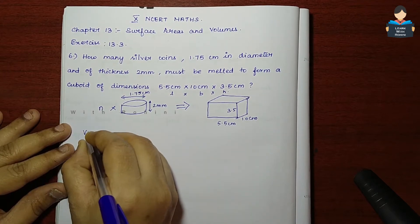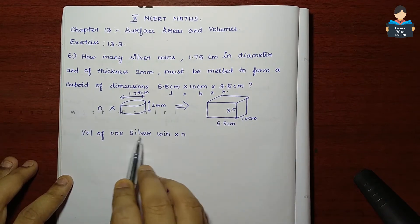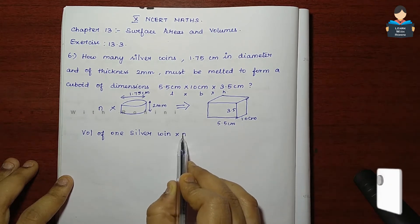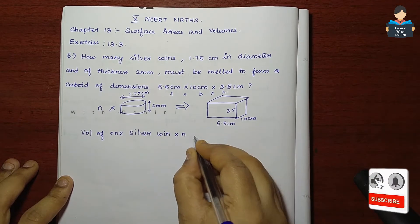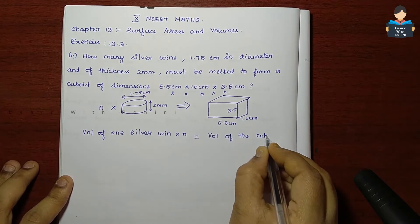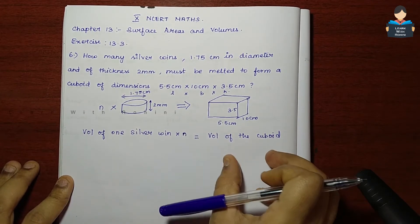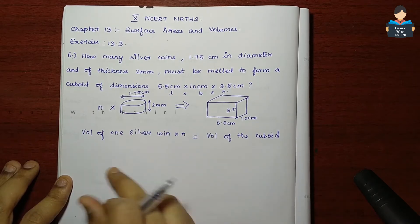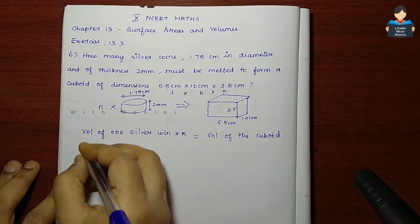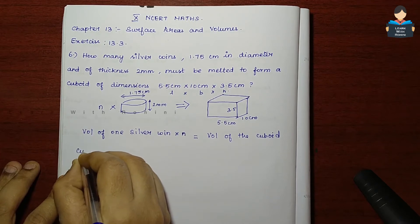So volume of one silver coin into number of silver coins. Volume of one silver coin times number equals volume of cuboid. Now first, let's find the volume of the cuboid and one silver coin.